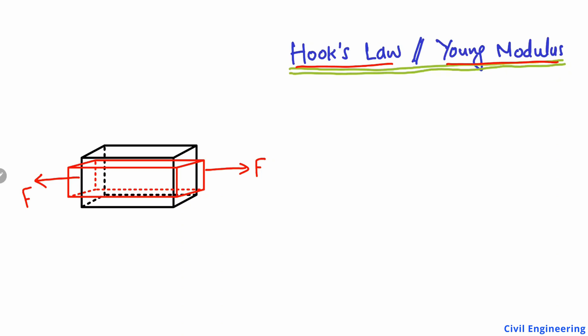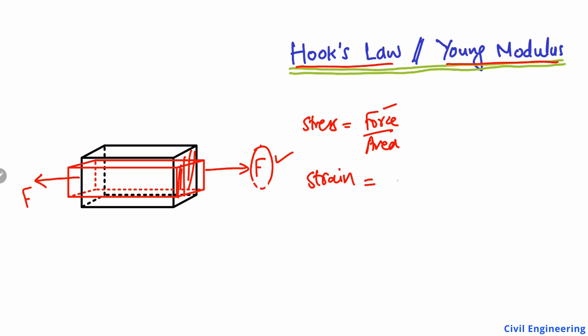Because of the application of load — since it's a tension load — it will increase and change in its dimension. Due to this applied load, some stress is created inside this object to resist this deformation. Stress will be equal to force per unit area, where force is the applied load divided by the cross-sectional area. Due to this stress, there will also be some strain produced inside this object, which is equal to the change in length divided by the original length — this is tensile stress and tensile strain.